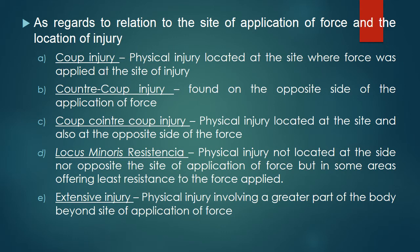As to the relation to the site of application of force and the location of injury: coup injury is a physical injury located at the site where force was applied; contrecoup injury is found on the opposite side of the application of force; coup-contrecoup injury is located both at the site and at the opposite side of the force; locus minoris resistenciae is a physical injury not located at the site nor opposite the site of application of force but in some area offering least resistance to the force applied; and extensive injury involves a greater part of the body beyond the site of application of force.